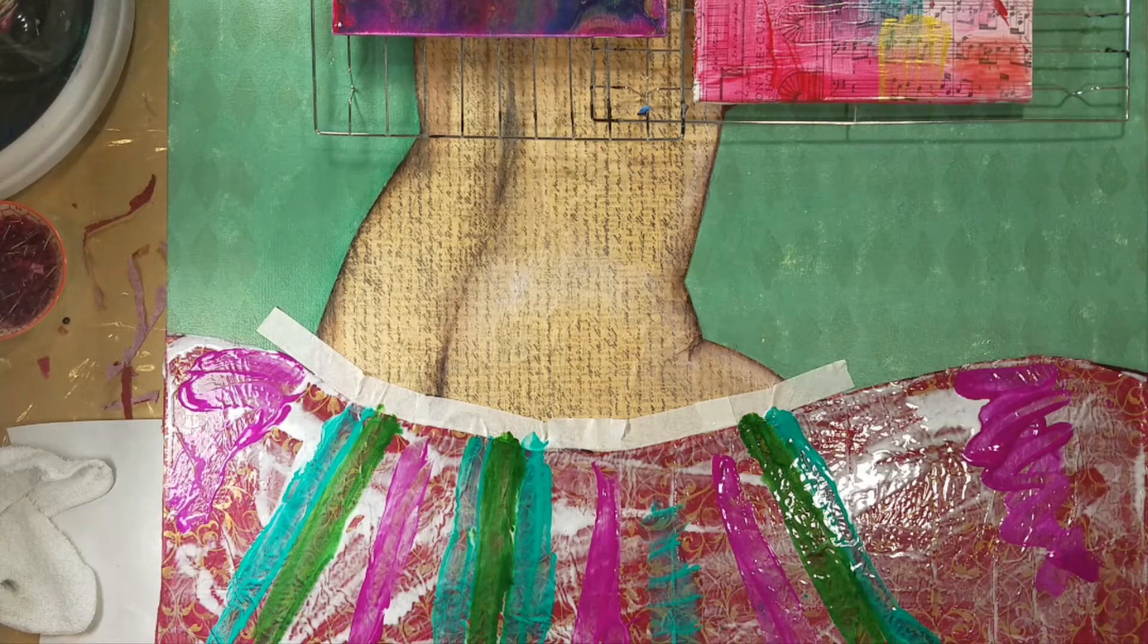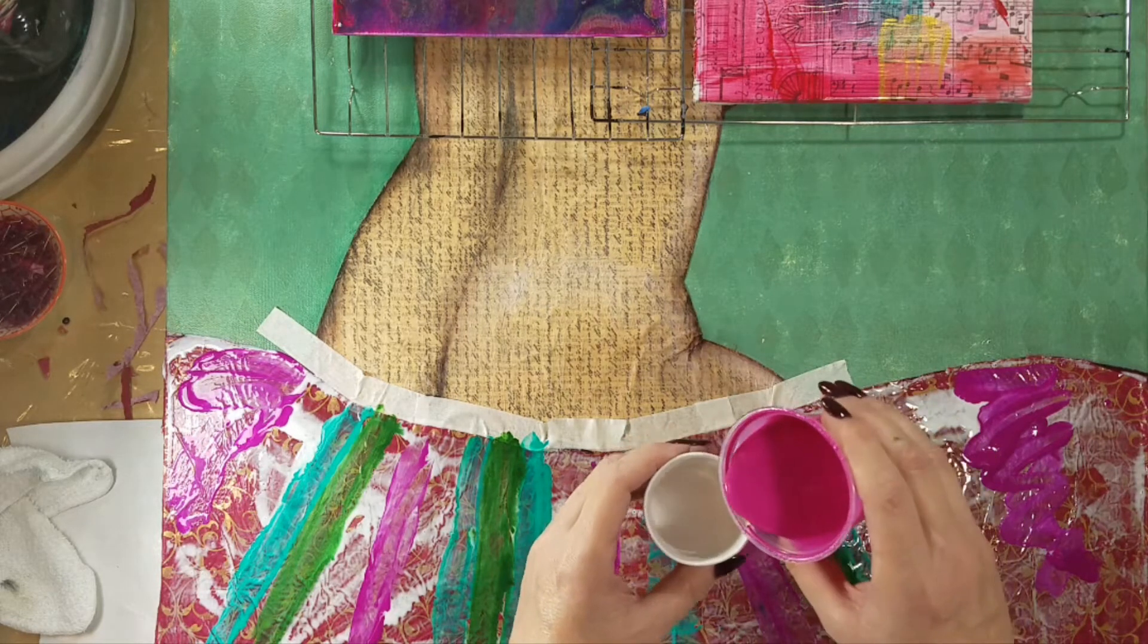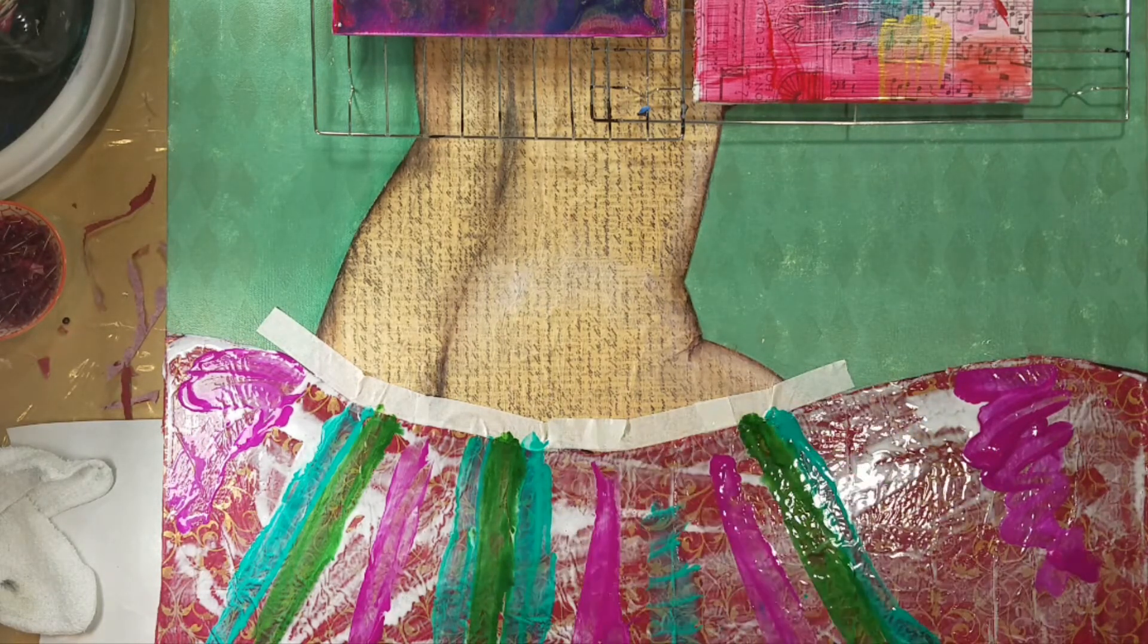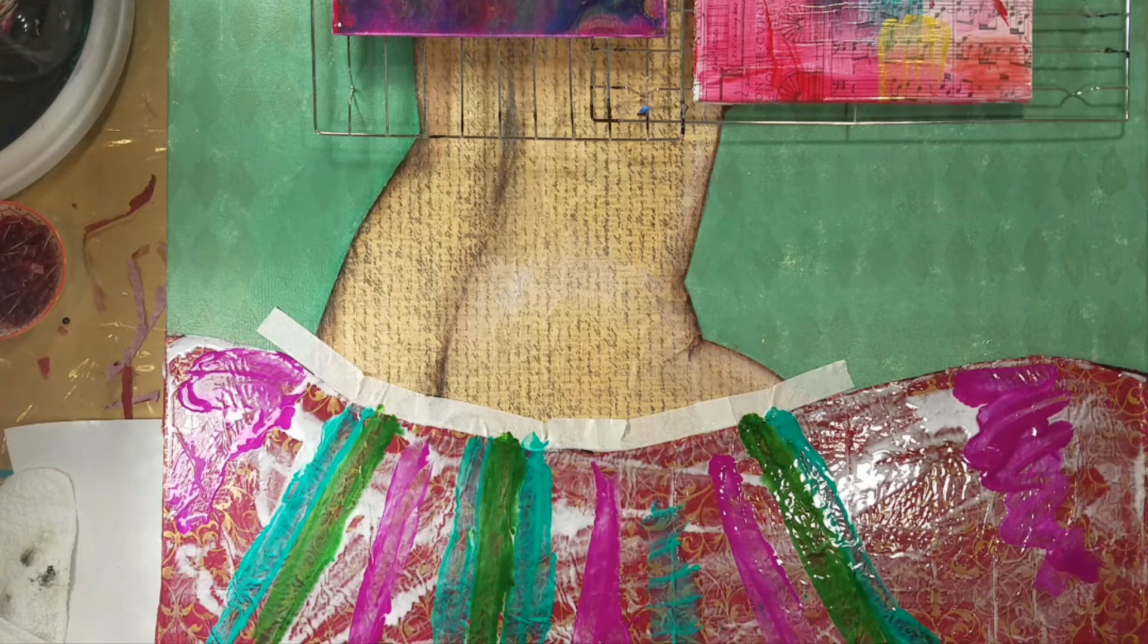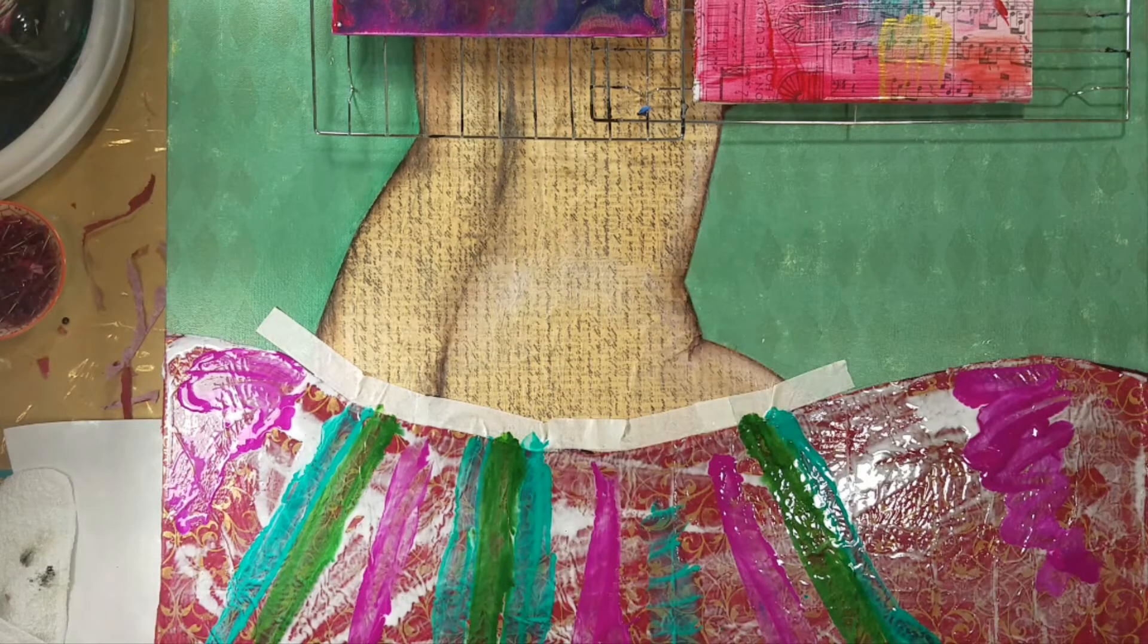These are all transparent, but when the GAC 800 dries clear, they will darken and show the color below.